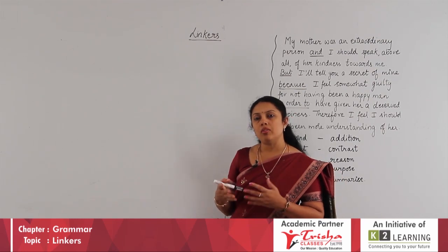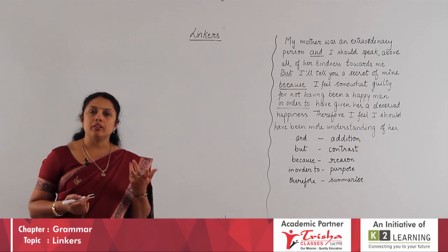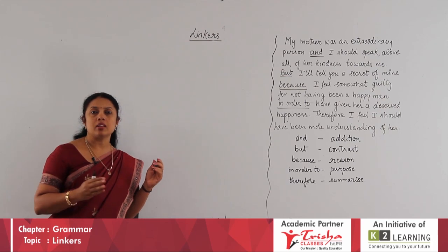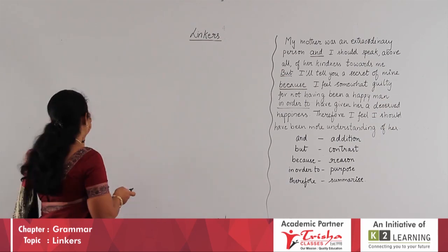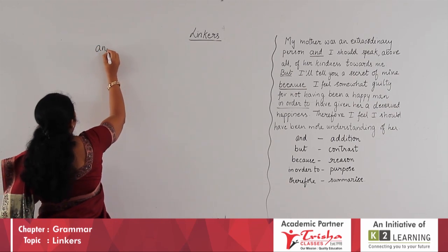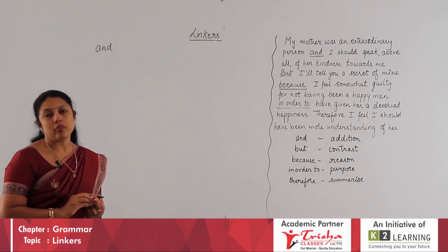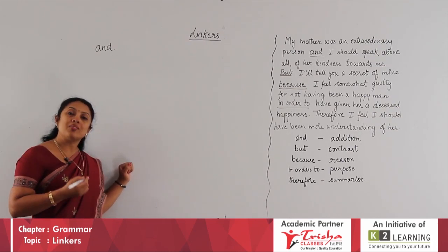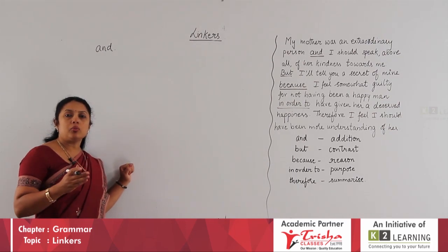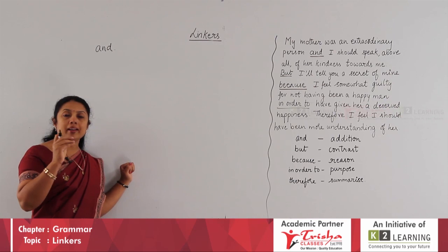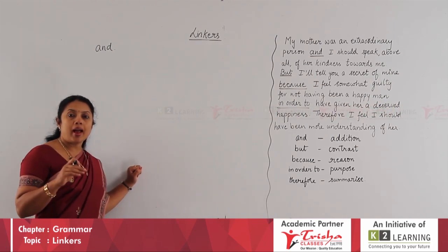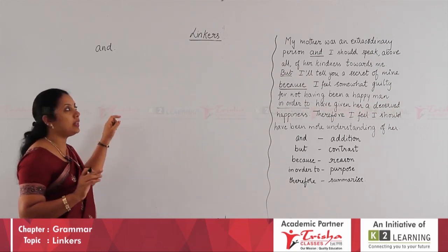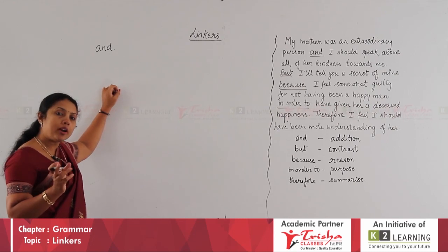In younger classes like class 2 and class 3, when you were made to write sentences and join them together, the first linker all of us used was AND. That was one linker very popularly used. Even today, when students struggle to write fluently, they start writing AND everywhere — their answer has more AND than anything else. AND is still a very commonly used linker to join two sentences.